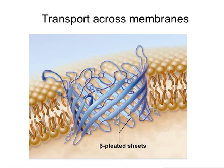This type of protein facilitates diffusion. Other proteins allow the passage of molecules against the concentration gradient — from low concentration to higher concentration — and that requires the expenditure of energy, as you'll see with the sodium-potassium pump described in your textbook.